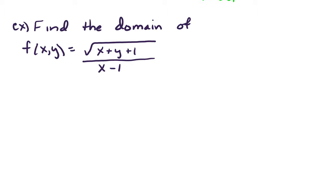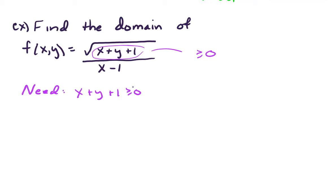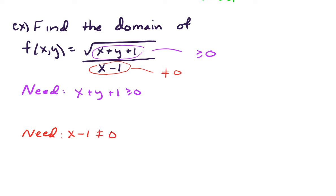Now, a couple of considerations. First of all, we need everything under the square root to be greater than or equal to 0, so we need x plus y plus 1 greater than or equal to 0. The other piece to consider is that the denominator needs to be non-zero — we're not allowed to divide by 0. So we'll also need x minus 1 not equal to 0.